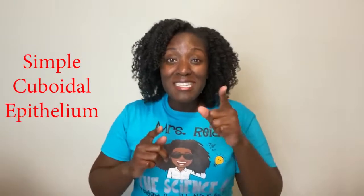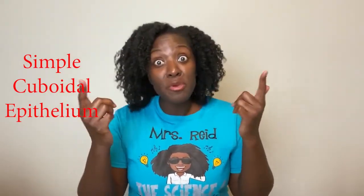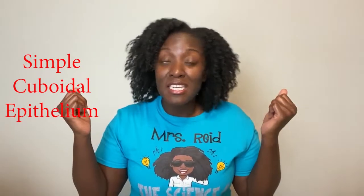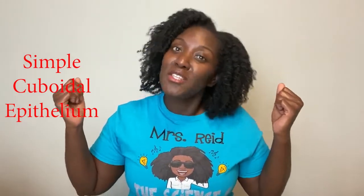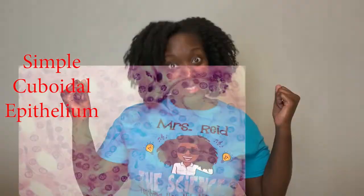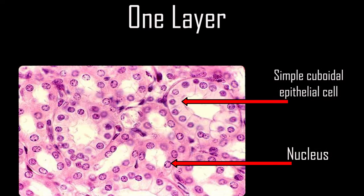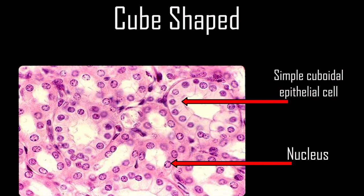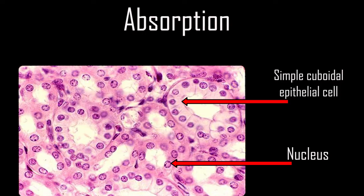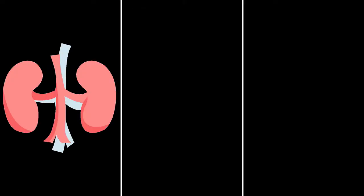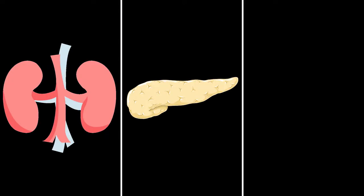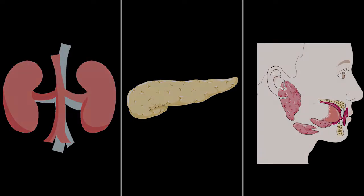Simple cuboidal: single layer, cube shaped. You can find this tissue in the kidney tubules. Simple cuboidal epithelium has one layer, is cube-shaped, and helps with secretion and absorption. You will find this tissue in the kidneys, pancreas, and salivary glands.